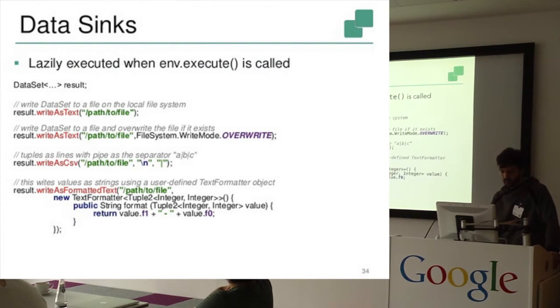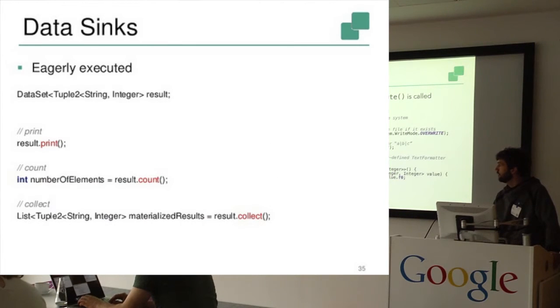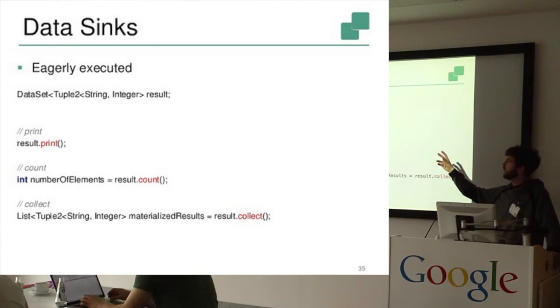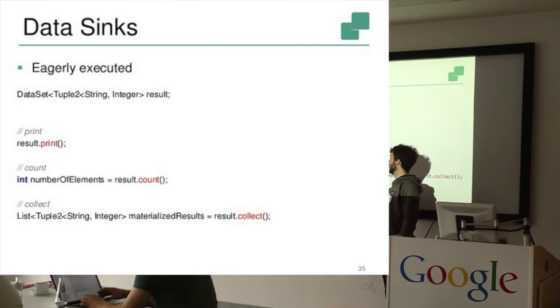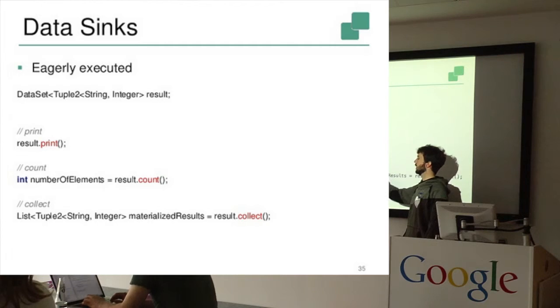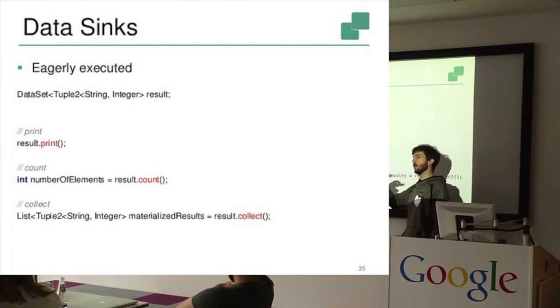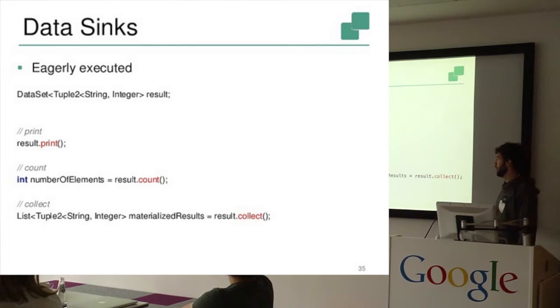So by default data sinks are always executed lazily, which means otherwise you execute, when you trigger the execution, they won't actually do anything. But as I mentioned, there are also those eagerly executed data sinks, which means once you call actually print or count or collect, you will actually get back the parallel data set materialized. You would get the count of the number of elements back. Here we would immediately print on your client, or collect would return you the actual parallel data set data.